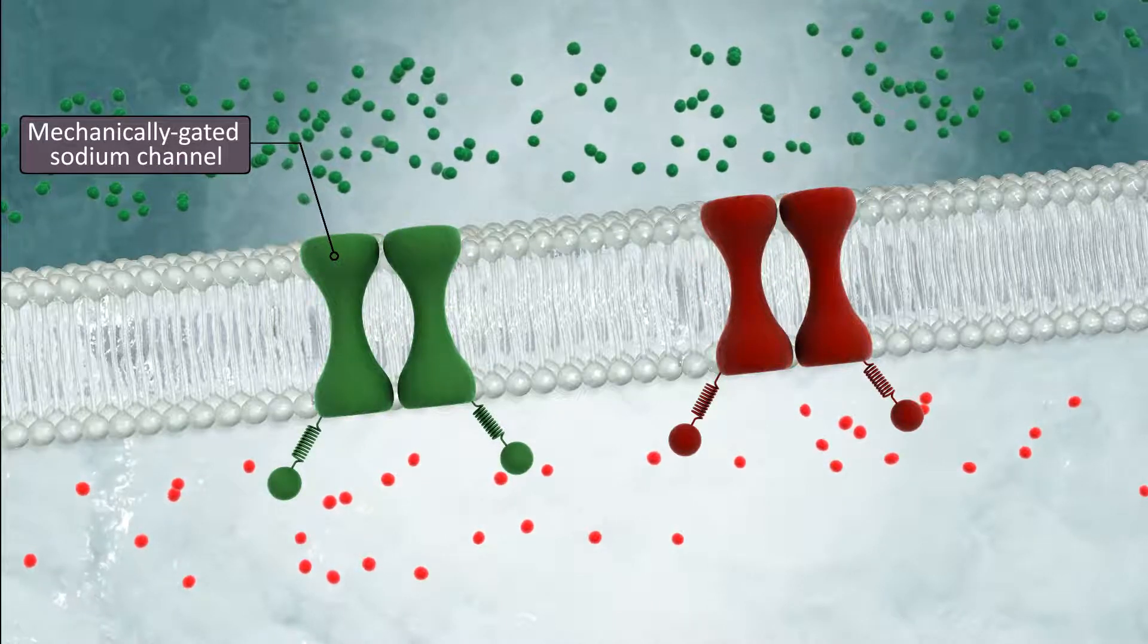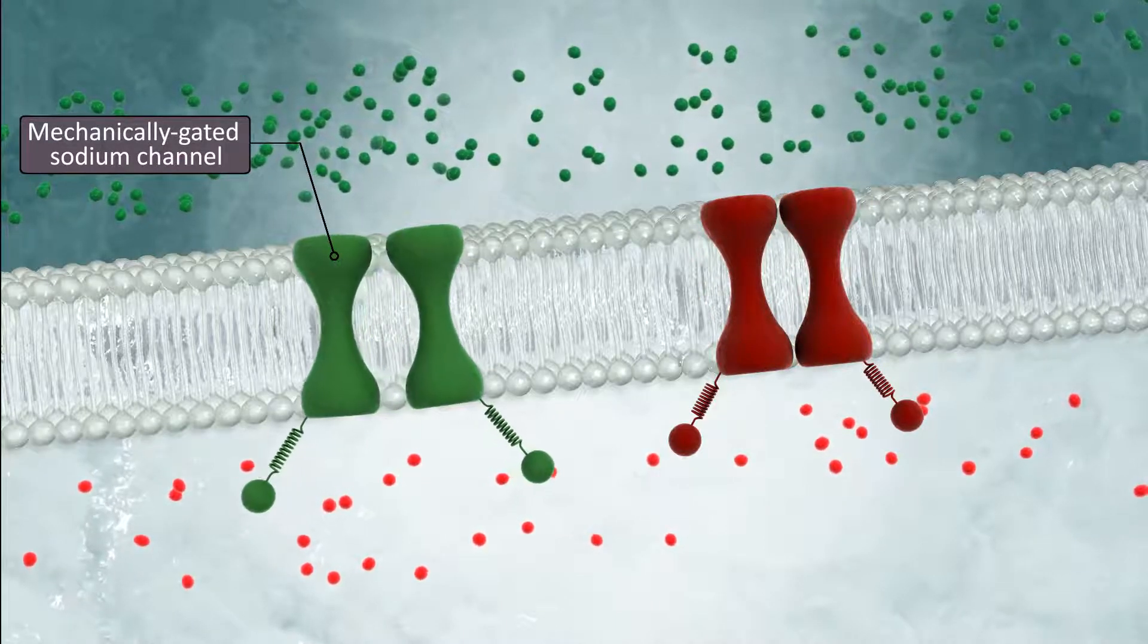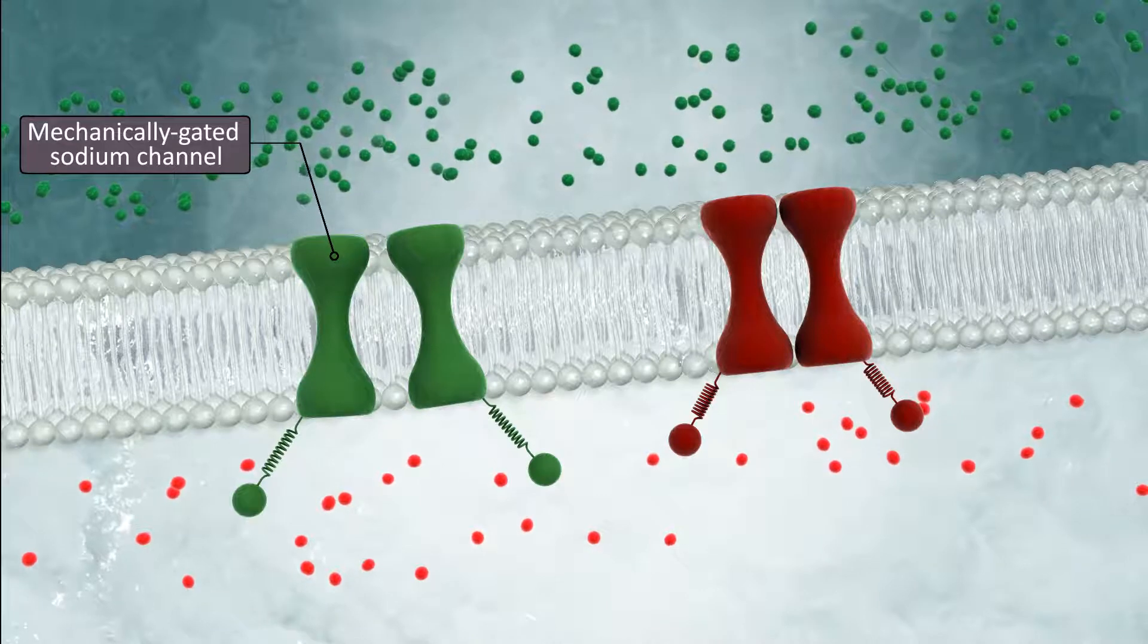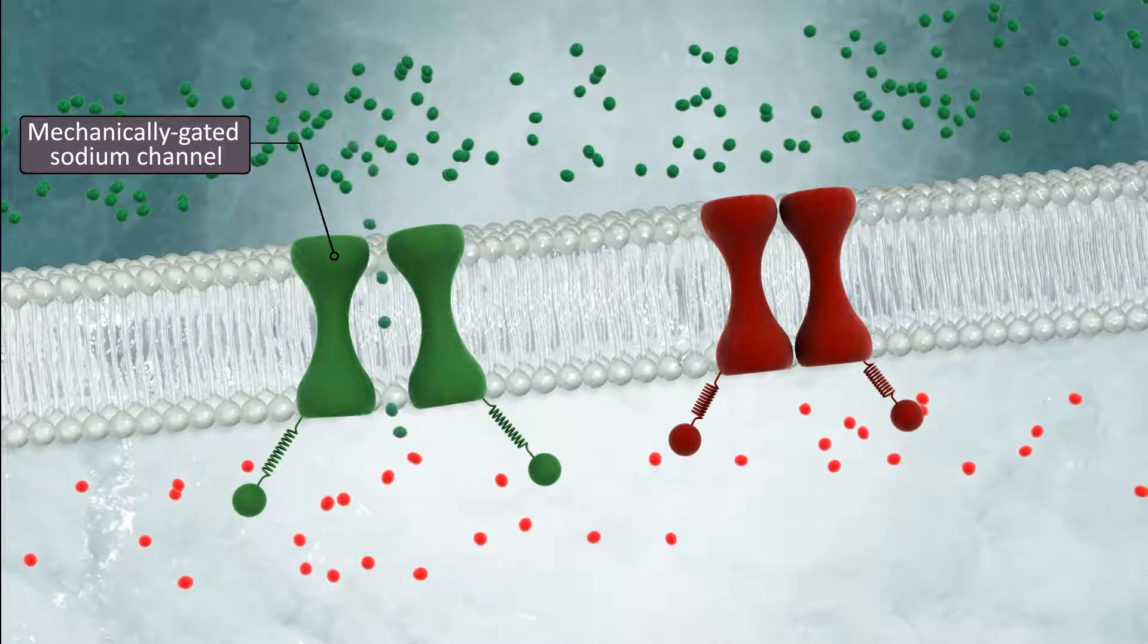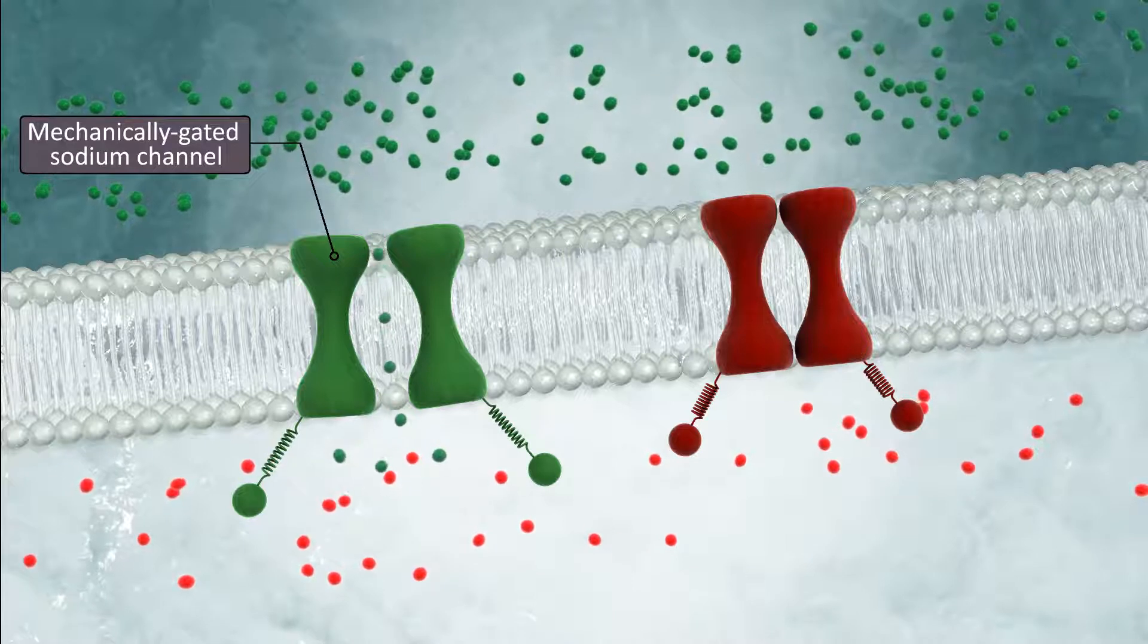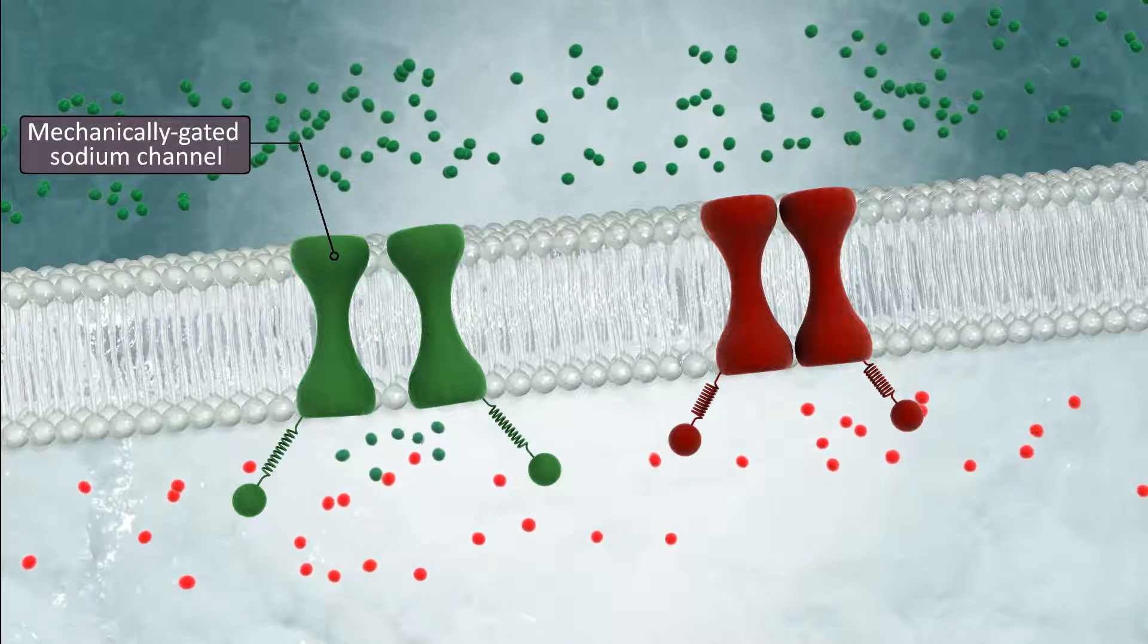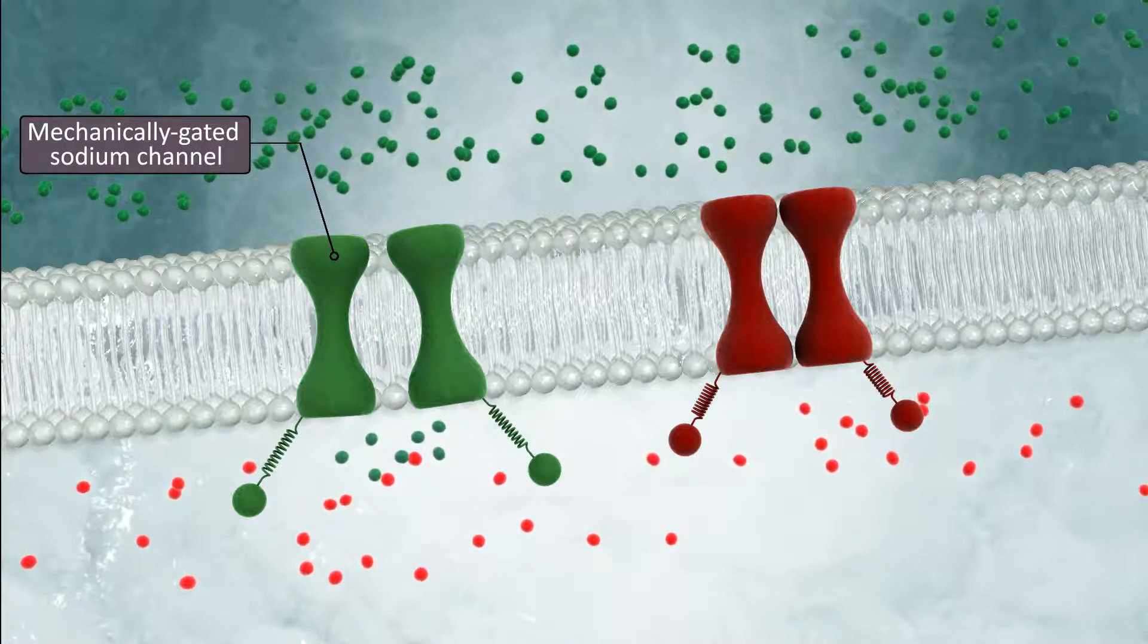Mechanically gated channels open when pressure, touch, or stretch is applied to the membrane. They are found in sensory receptors, located primarily in the skin, to inform the nervous system of mechanical changes in the surface of the body resulting from conditions in its environment.